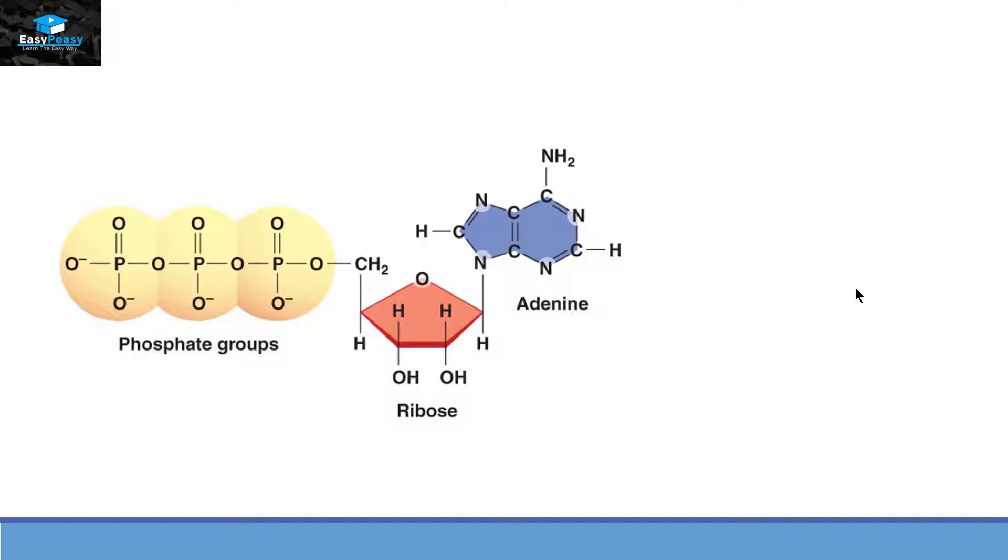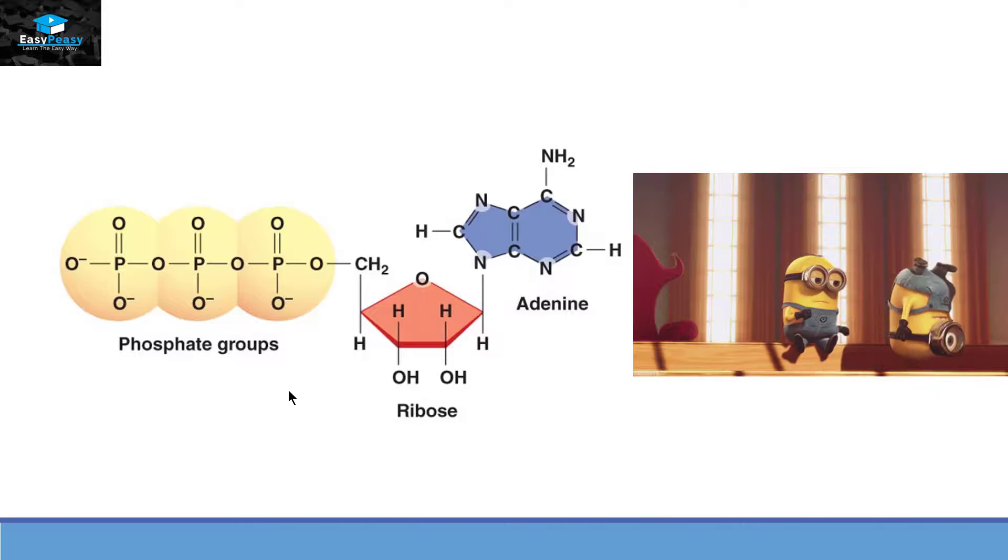Now the question is why are the electrons of oxygen and phosphorus present in high energy orbitals? Now if we look at the structure of this molecule we can see a lot of negative charge present on oxygen atoms and negative charges repel each other. That's how the tension is created in this molecule and the electrons are going to jump into the high orbitals and possess energy.